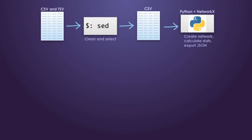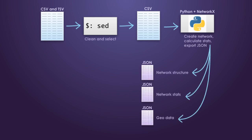The newly created CSV file is then passed to a Python program. Here, the NetworkX library assembles the nodes and links of the network and calculates various statistics. This information is then exported in JSON format.